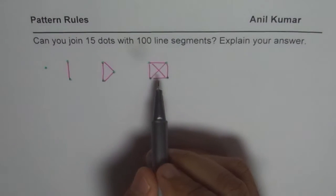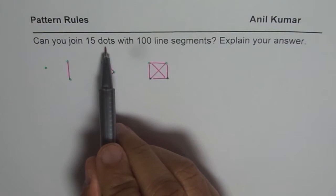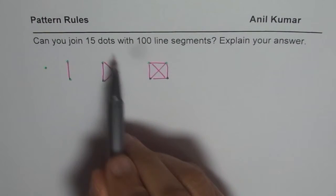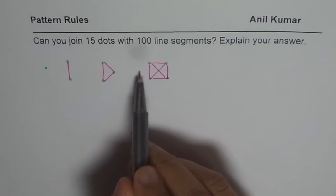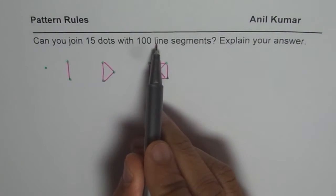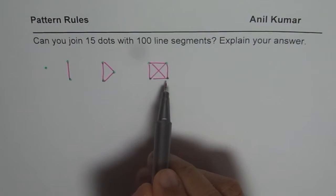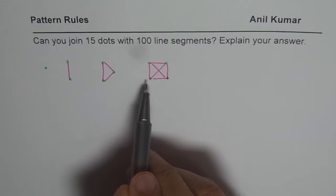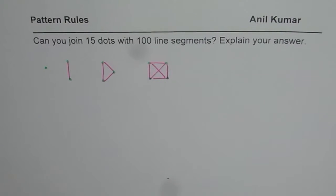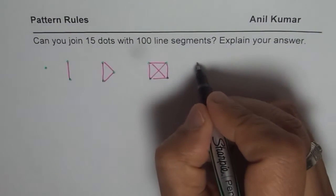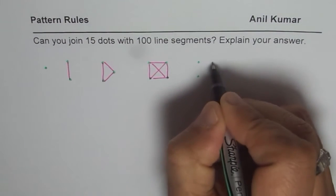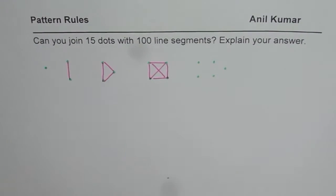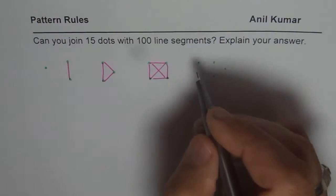So the question is: if I have 15 dots, can we join them all with 100 line segments? All dots should be connected. So how many line segments do I need? One way is to extend this pattern and see how the number of dots and segments change.